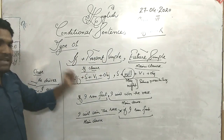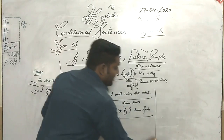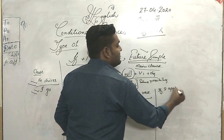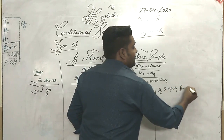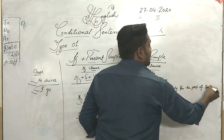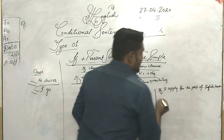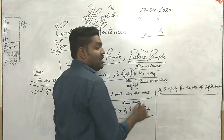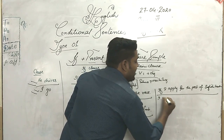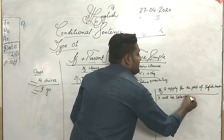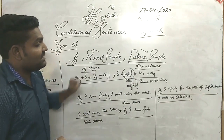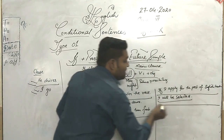We can also make a passive sentence. For example: 'If I apply for the post of English teacher' — this is the if clause. Now the main clause can be in the passive: 'I will be selected.' The structure here is in the passive voice.